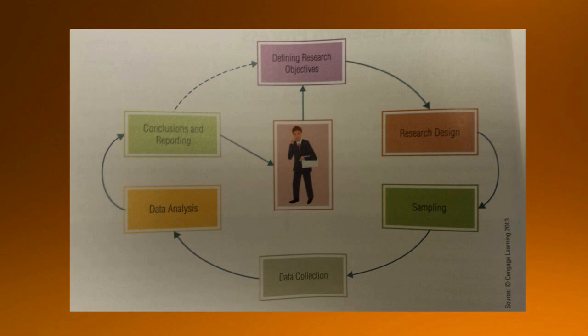With the first stage of the marketing research problem taken care of and our objectives set, we go out and say: let's look at how we're actually going to collect that information. This is what we call the research design stage — the next critical stage. That's where we sit down and actually plot out a strategy for how we're going to collect the information that will be used to answer those objectives.